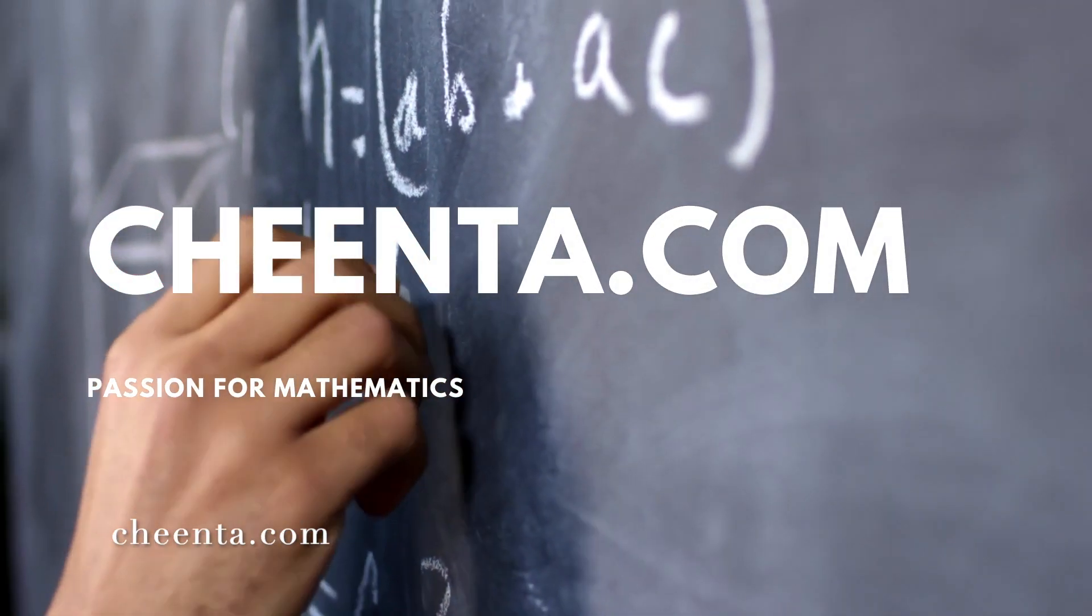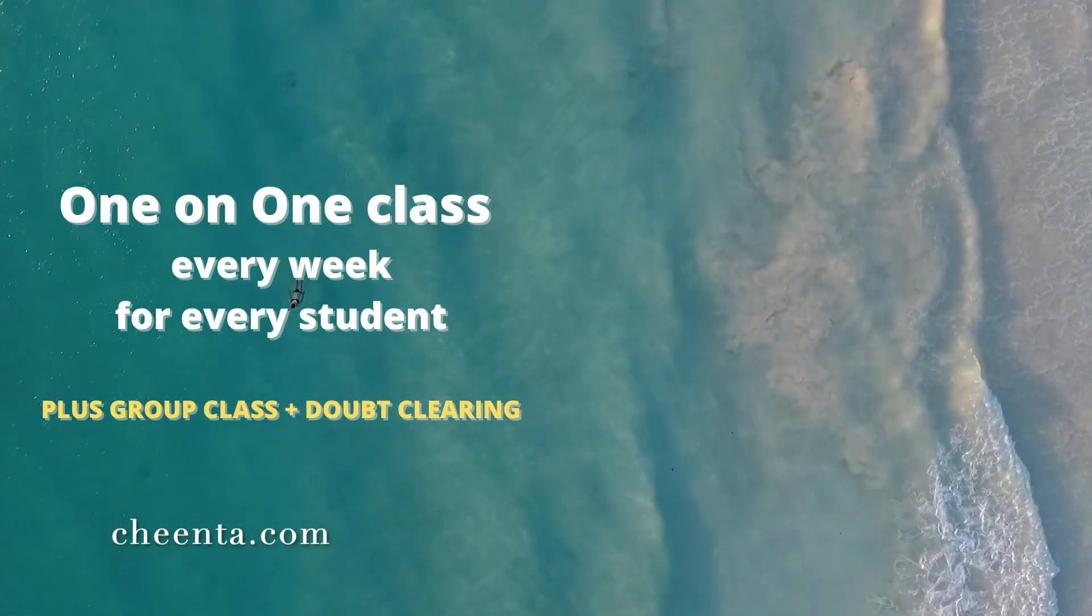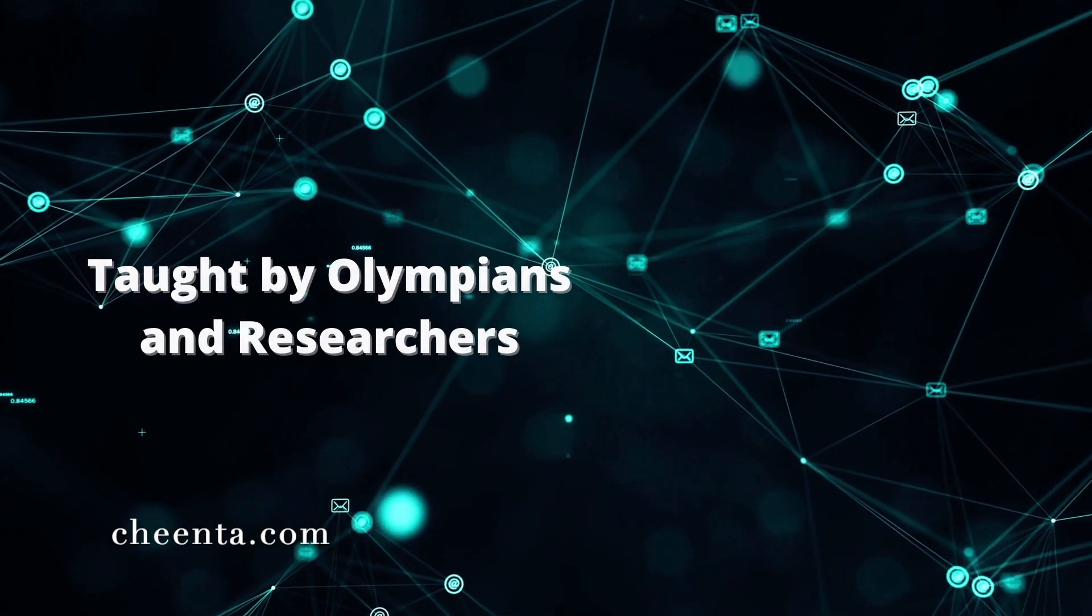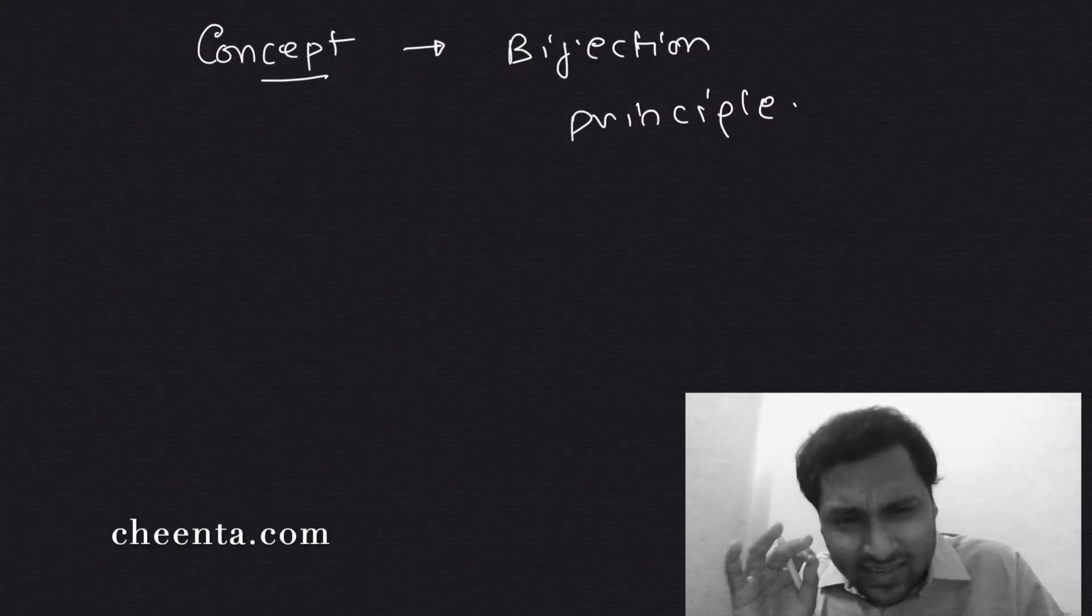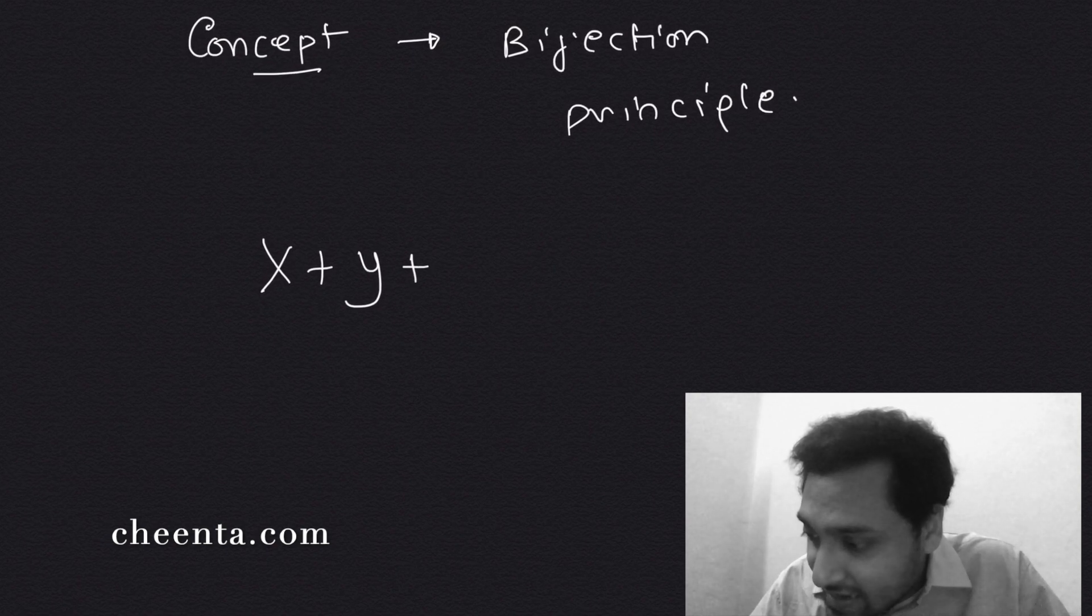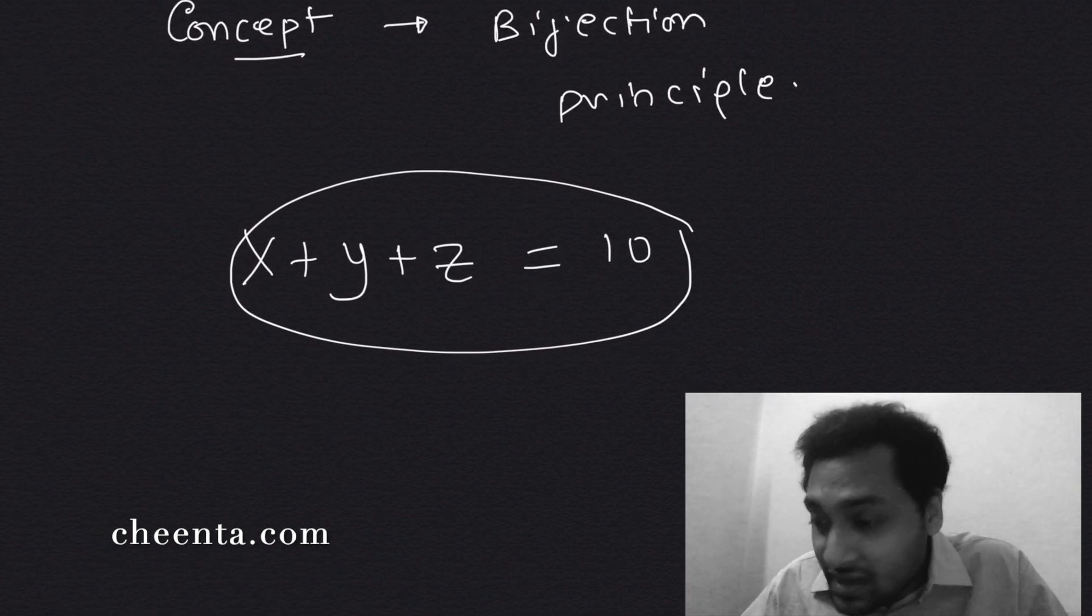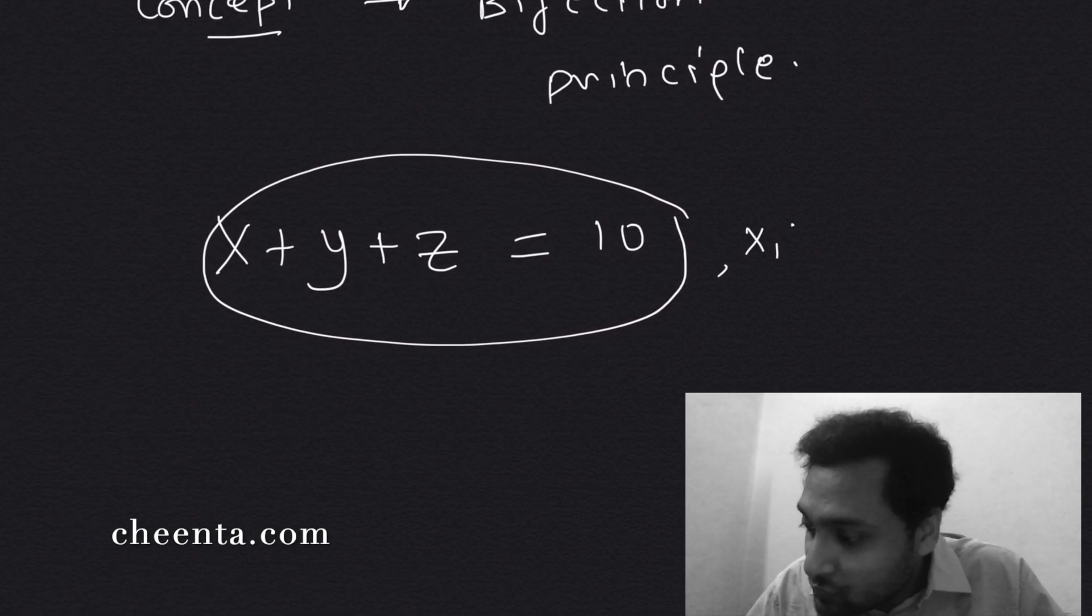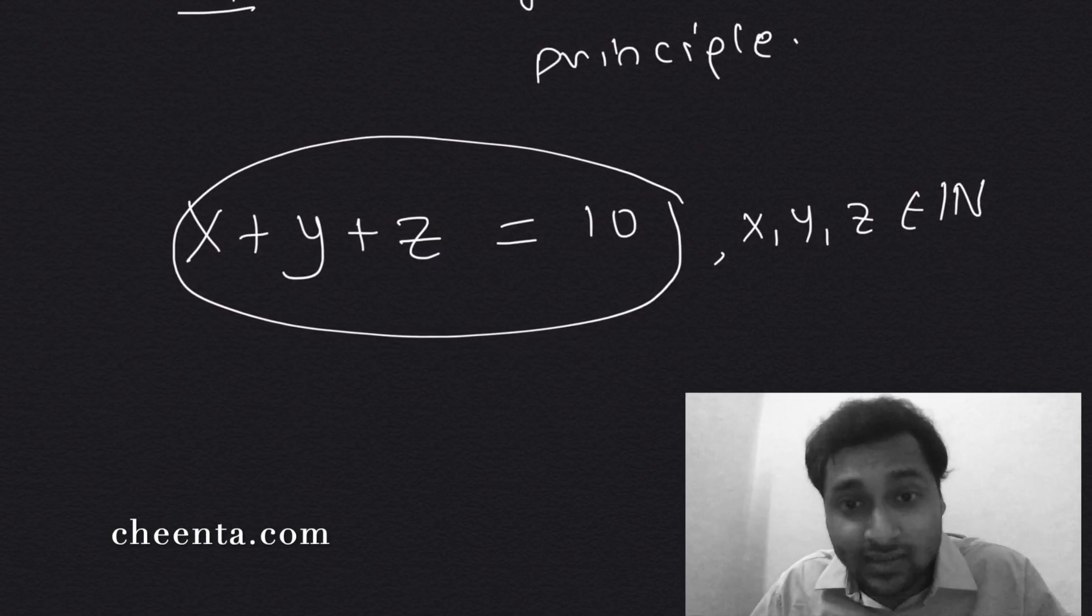I have talked about it in some of the videos previously, but we will start today with a very fundamental problem. It is a very simple problem. It says that x plus y plus z equals 10. This is the given equation, and here x, y, and z are natural numbers, positive integers.